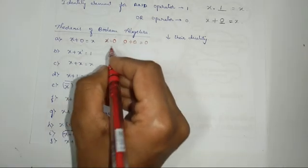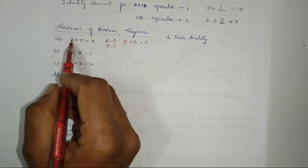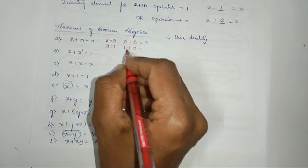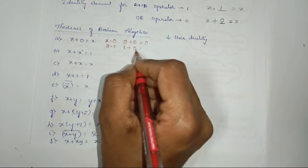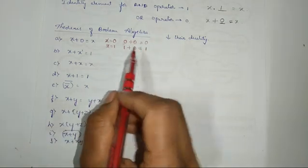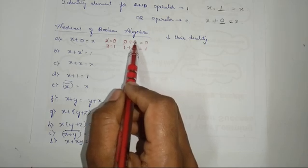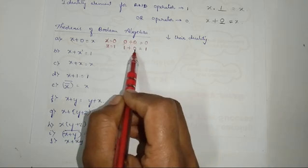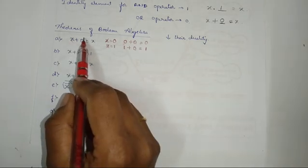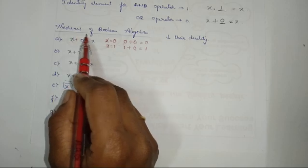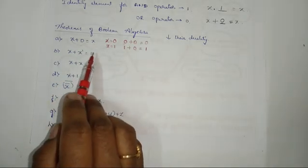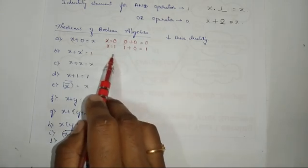I got the output. Similarly, take x as 1. For x equal to 1, I write 1 plus 0, which is 1 OR with 0. If any one input is 1 in an OR gate, the output will be 1. So even though the inputs are 0 plus 0 and 1 plus 0, the output depends only on x, not on the 0. So x plus 0 gives the same input as the output.